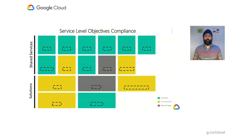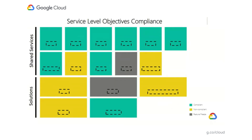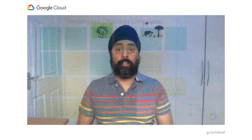This is an example of our service level objectives compliance dashboard that we created in-house. This gives us a single pane of glass for both business and solution teams on how well our apps and services are performing. Each of the colored boxes represents whether a solution or shared service is either in-compliant, non-compliant, or possibly even in feature-free. And with that, I'd like to thank you for listening to me today, and I'll hand it over to Yuri.